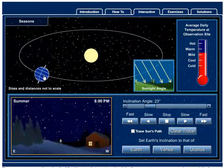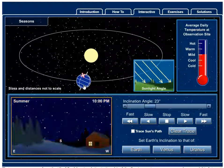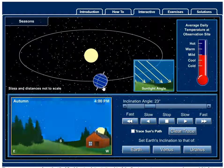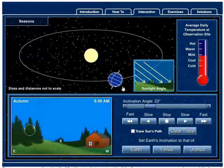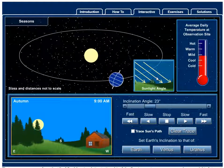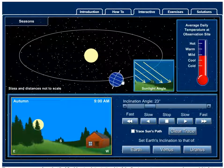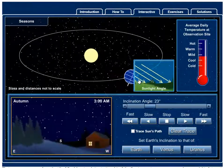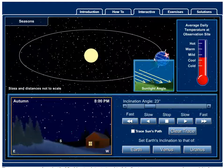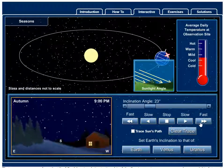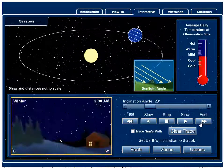I'm now going to grab Earth and move it to fall. Notice that the Sun is getting lower and lower in the sky. The angle is getting a little more angled again. Our temperature is dropping. And then we would get back to winter and this would continue.